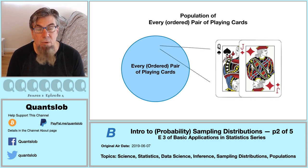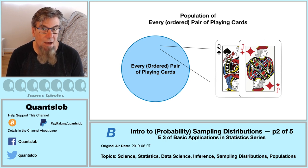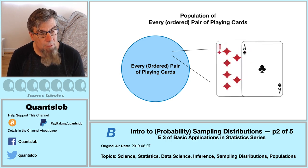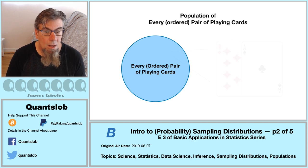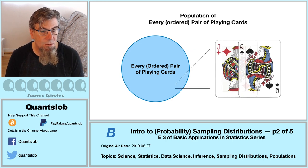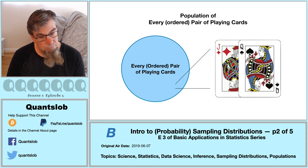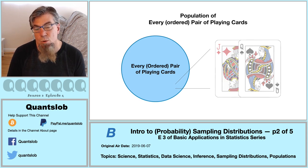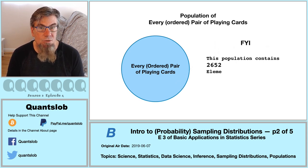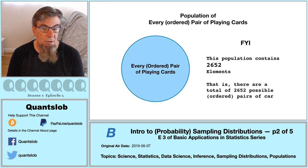This population contains elements such as the Queen of Spades then the Jack of Diamonds, the Ten of Diamonds then the Ace of Clubs, and also the Jack of Diamonds then the Queen of Spades. It just so happens that this population contains 2,652 elements. And to tie things together, this population — the way we're thinking about it — is essentially imaginary, though there's nothing stopping us from creating it as a concrete population if we had access to lots of decks of playing cards and a lot of free time.